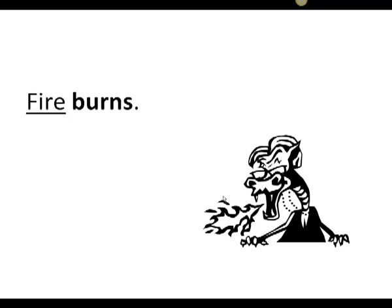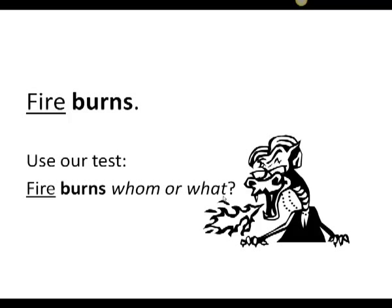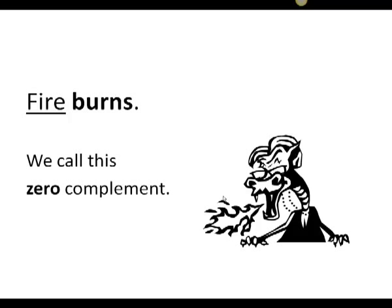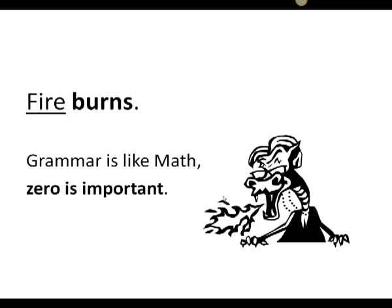The first sentence, fire burns, contains only two words. We use our test and ask whom or what after the verb. Fire burns whom or what? But we can't answer this question. There just isn't any information in the sentence. If there's no possible answer, then there is no complement. We call this a zero complement. Grammar is like math. Zero is important.